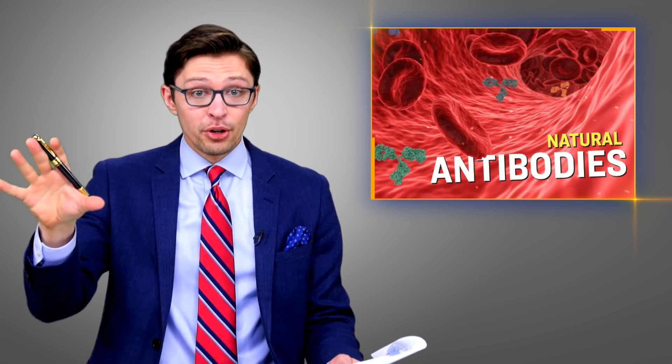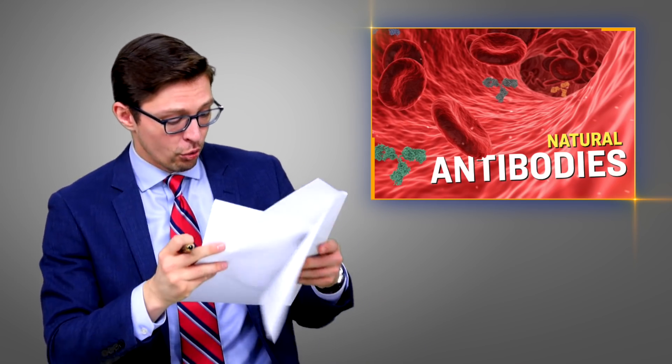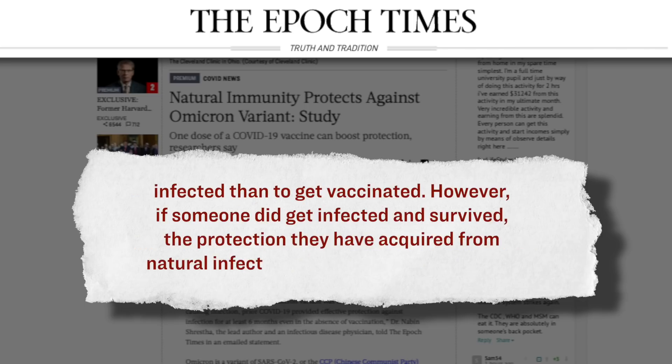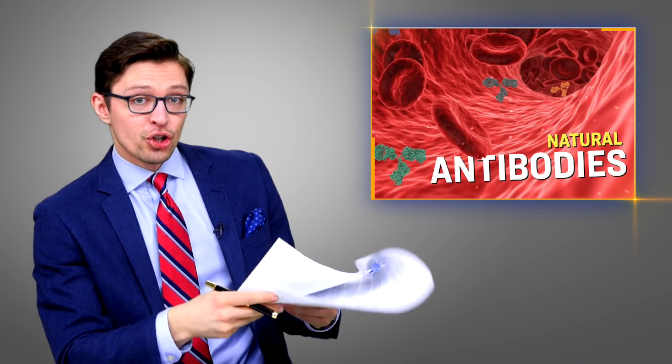However, the scientists mentioned that they were unsure as to why this was the case and suggested that other scientists should look into it. Regardless, their conclusion is that natural immunity should be considered as effective as a two-dose regimen of the vaccine and therefore should be acknowledged by the broader society. Here's specifically what they wrote as part of their conclusion: 'Effectively, prior infection should be considered at least as protective in protecting against future infection as two doses of an mRNA vaccine. This is not to say that it is better to get infected than to get vaccinated. However, if someone did get infected and survived, then the protection they have acquired from natural infection should be acknowledged.'